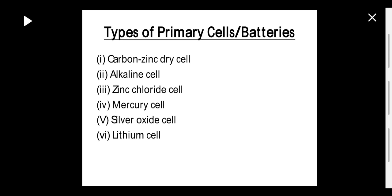There are different types of primary batteries. Primary batteries are disposable — meant for single usage only, and the chemical reaction in them is not reversible. The various types are: first, carbon zinc dry cell; second, alkaline cell; third, zinc chloride cell; fourth, mercury cell; fifth, silver oxide cell; sixth, lithium cell.